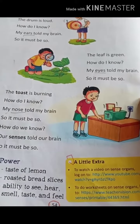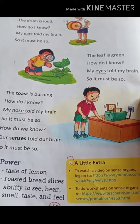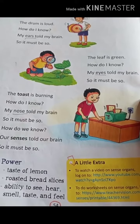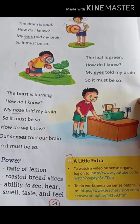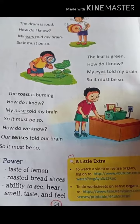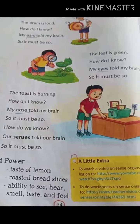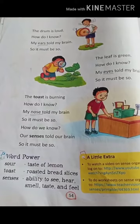The leaf is green. How do I know? My eyes told my brain. So it must be so. The leaf is green. How do you know? The eyes told your brain. So it must be so.